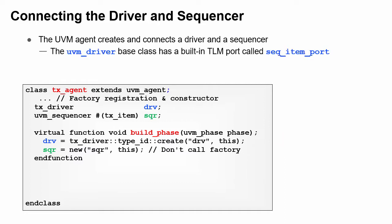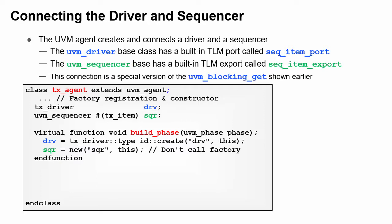The TLM port in the driver is called SequenceItemPort. The sequencer's export is called SequenceItemExport. This TLM connection is a special version of the UVM blocking port that can handle bidirectional transfers.